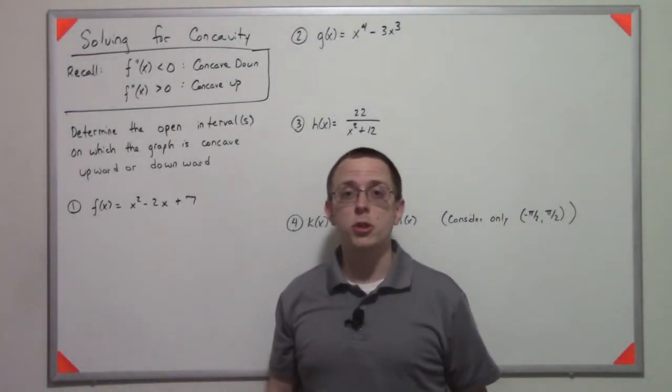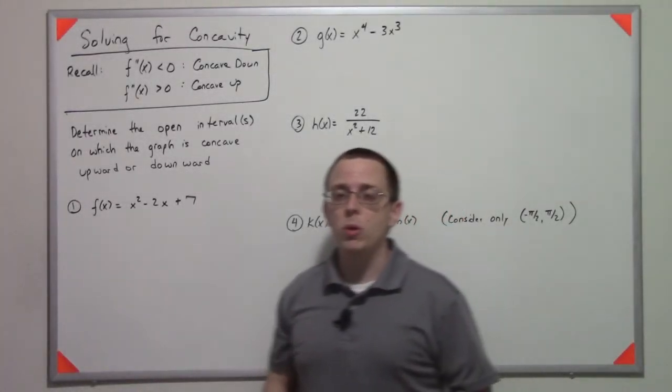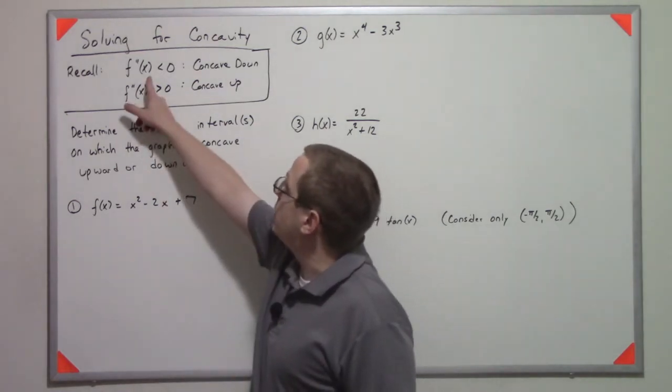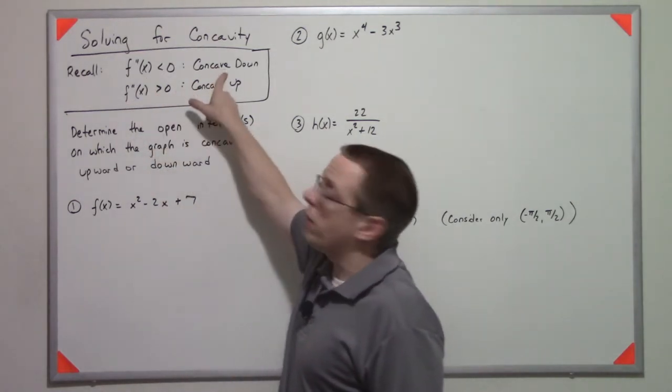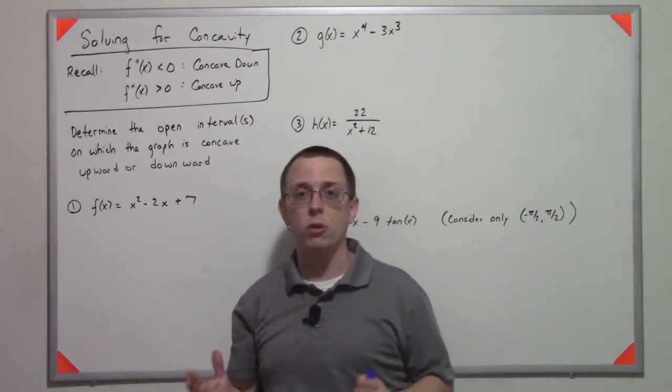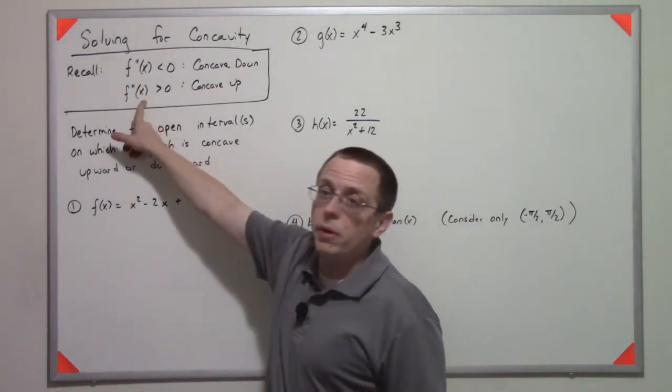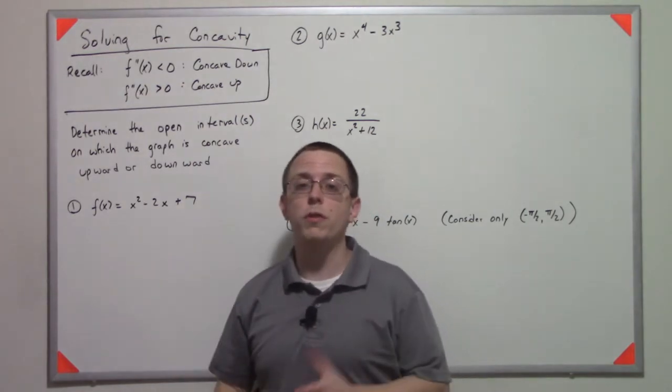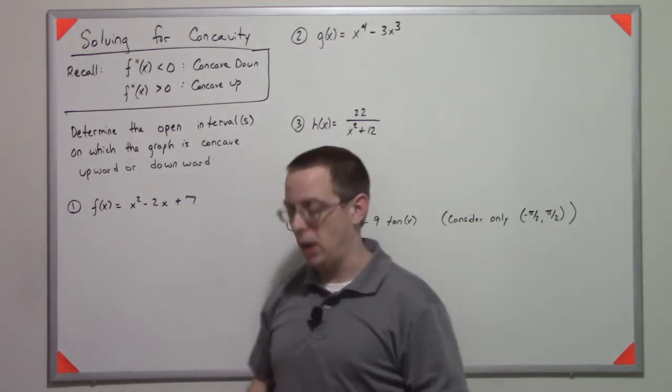Let's solve some explicit functions for their concavity. Now remember that if the second derivative is negative, we have a concave down, or the function's graph is concave down on that interval. And if the second derivative is positive on some interval, the function's graph is concave up on that interval.